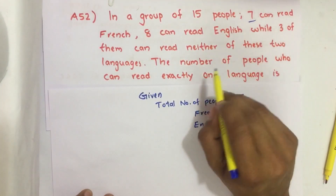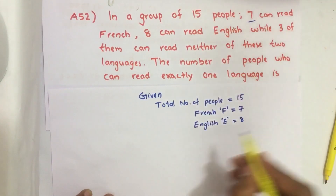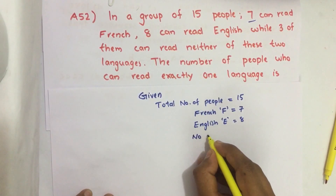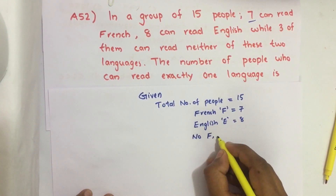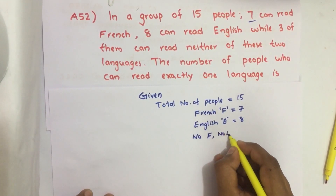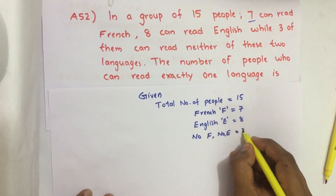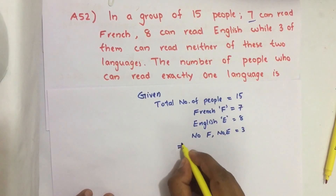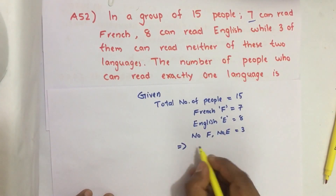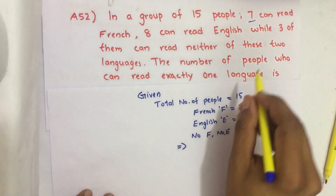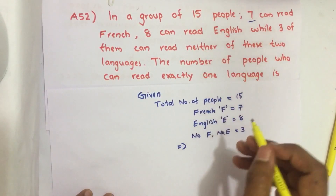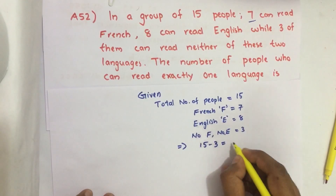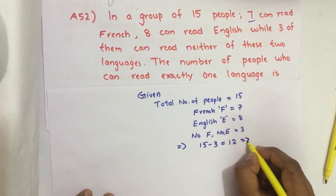While 3 of them can read neither French nor English — there are 3 such people. That implies people who can read any of these languages equals 15 minus 3, which is 12.